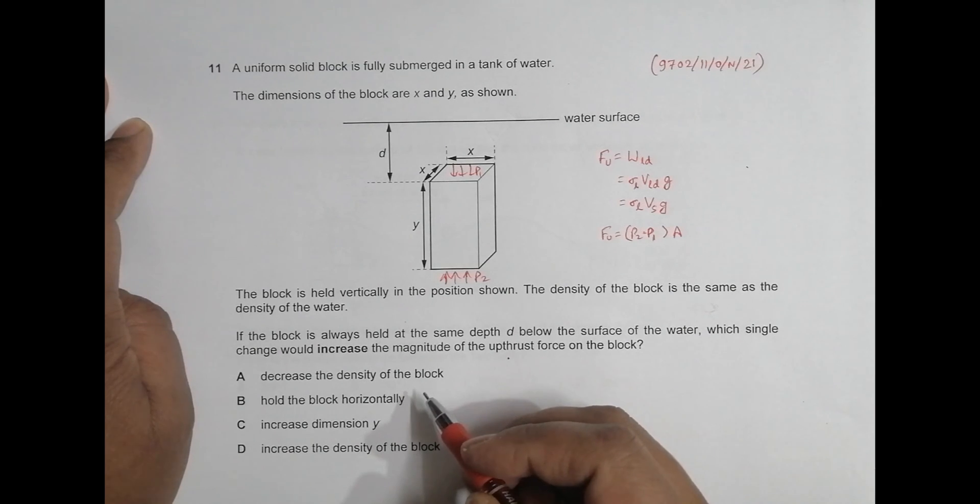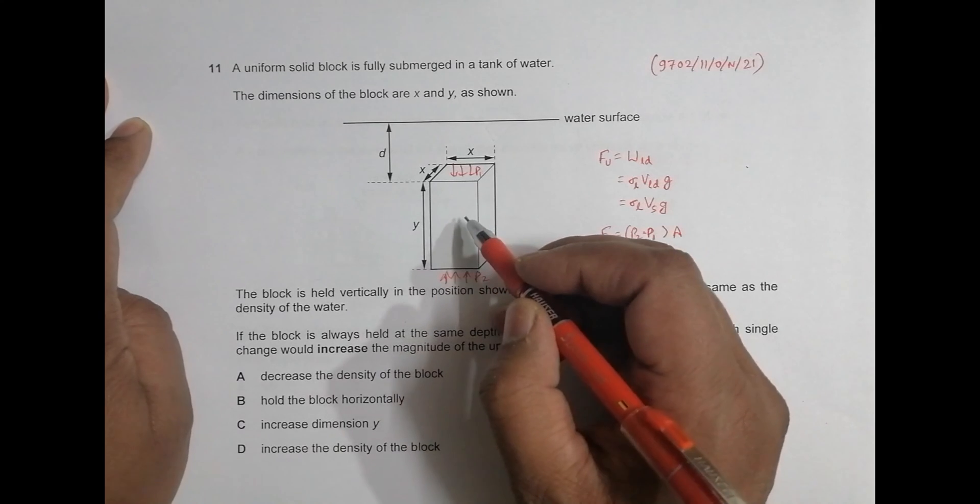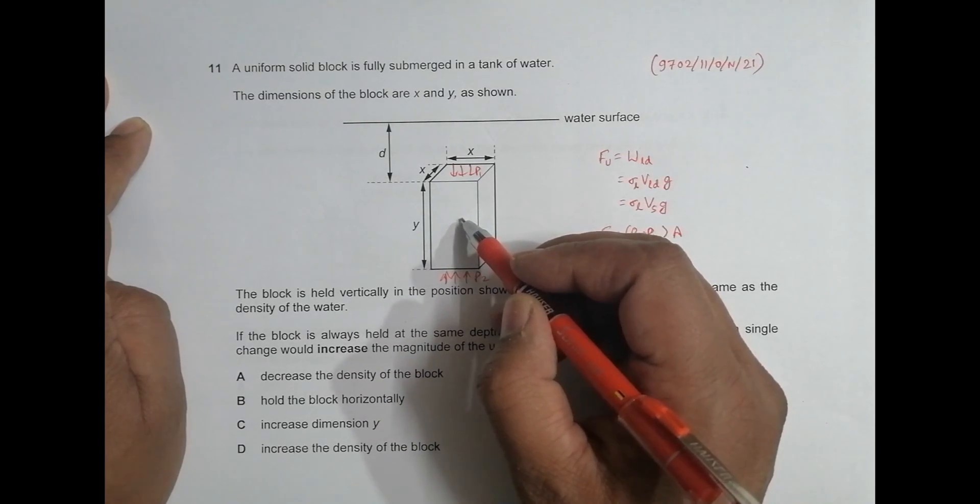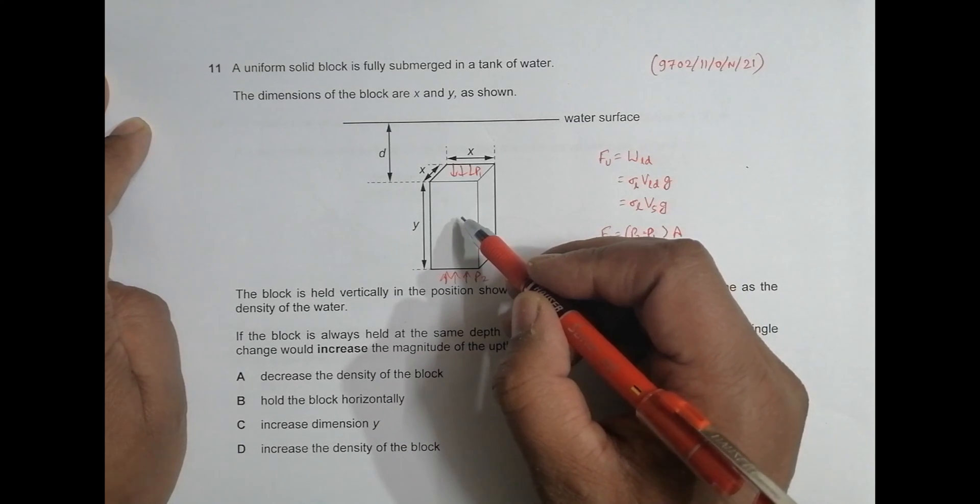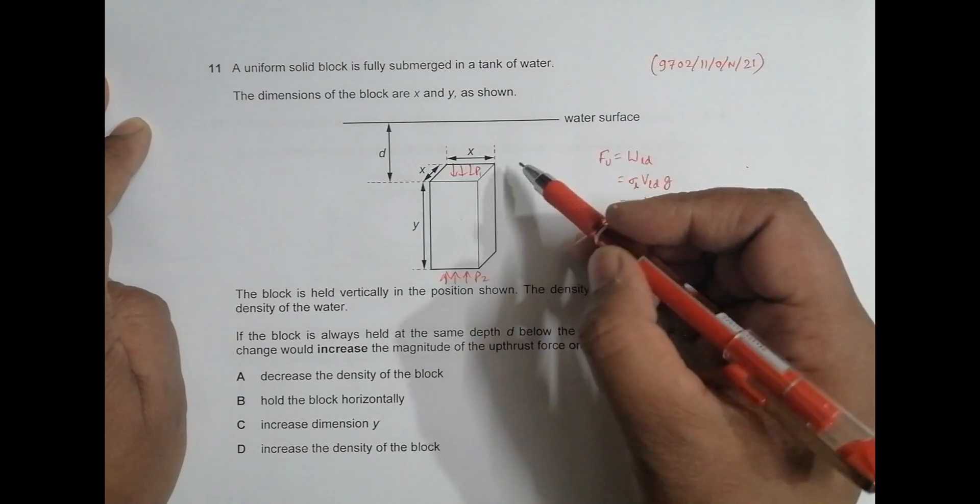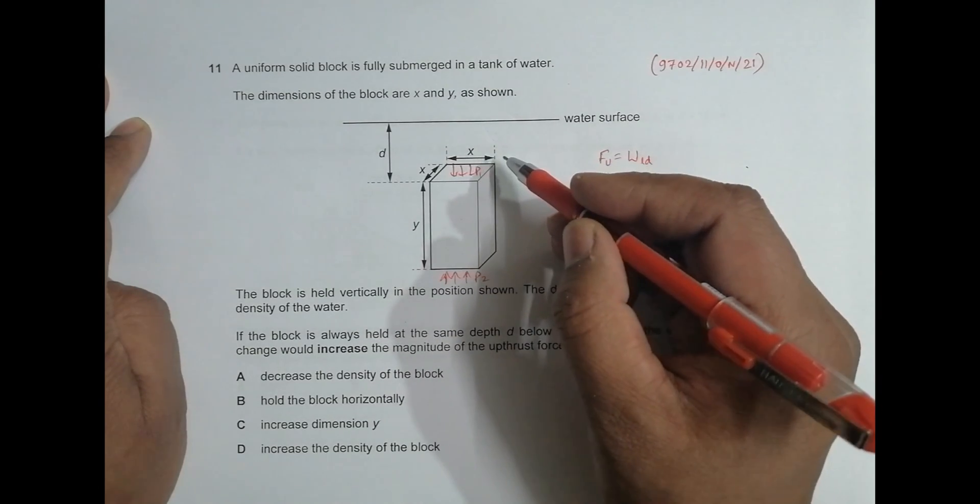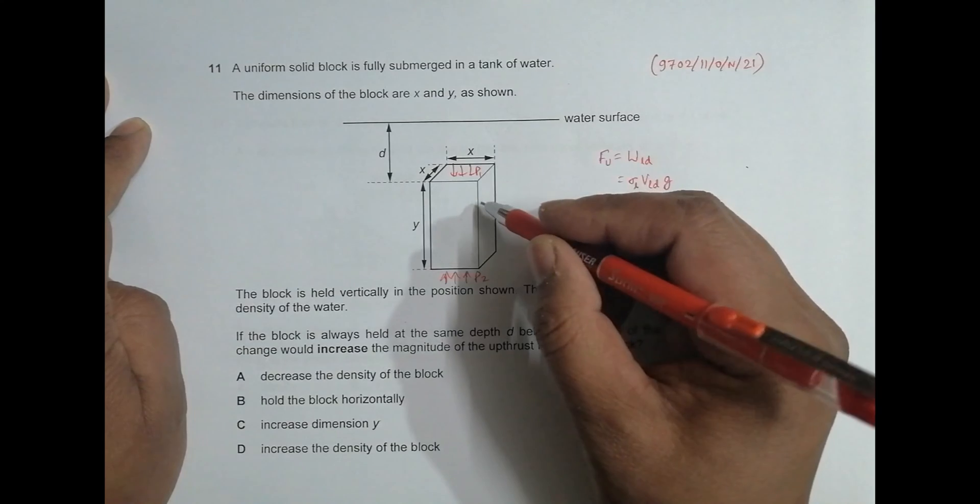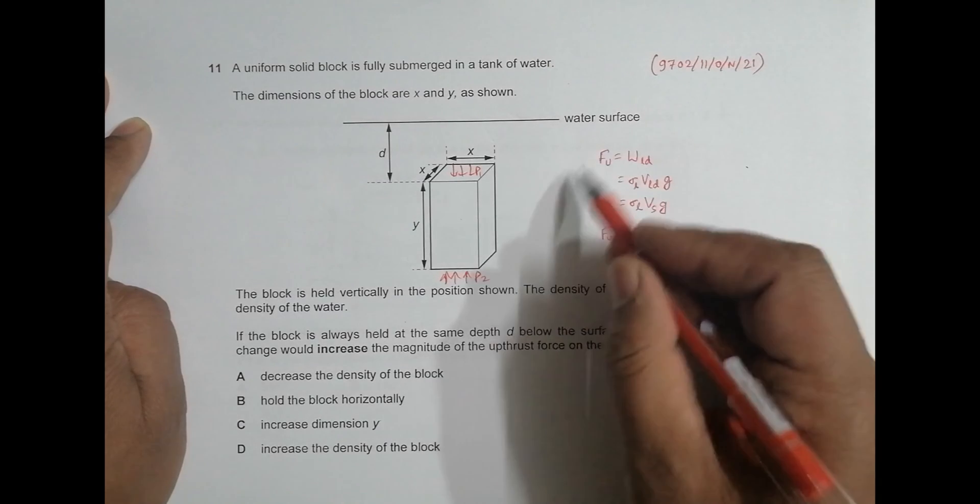Now let's investigate. The first is, decrease the density of the block. But since we are holding it here, it doesn't make any sense. Or even if we decrease the density, if we cannot let it go, then there's no difference. If we let it free, yes, it can come up because the upthrust becomes higher. But otherwise, it's of no use. Decreasing the density of the block does not cause a difference in the upthrust because it's not involved here.